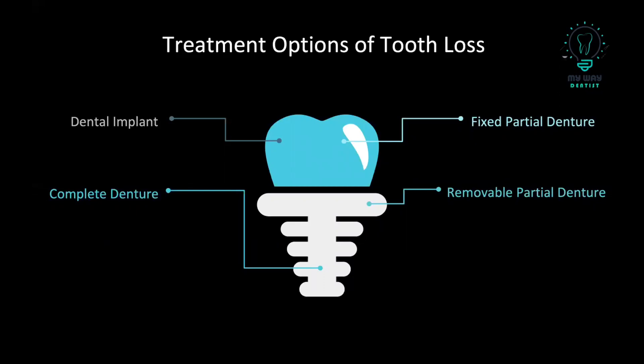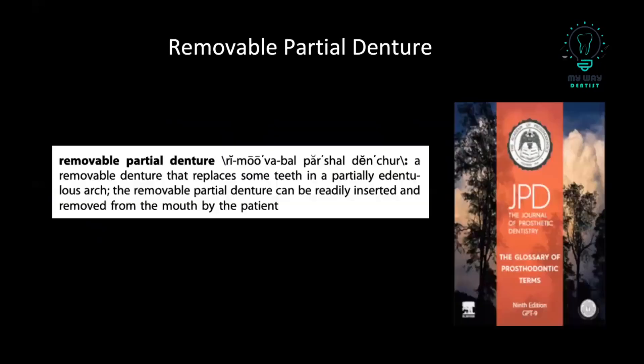We are going in these slides to focus on the removable partial denture. The removable partial denture is defined as the removable denture that replaces some teeth in a partially edentulous arch, and it can be readily inserted and removed from the mouth by the patient.